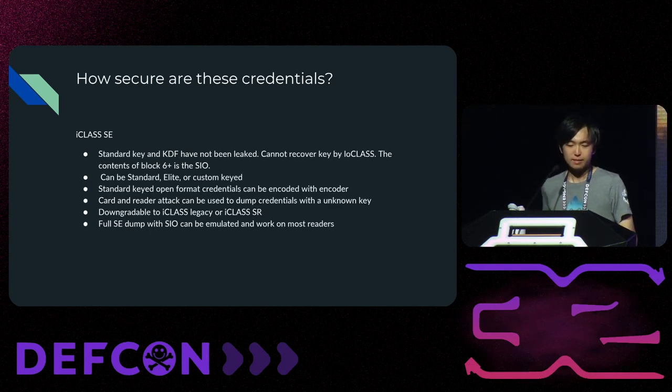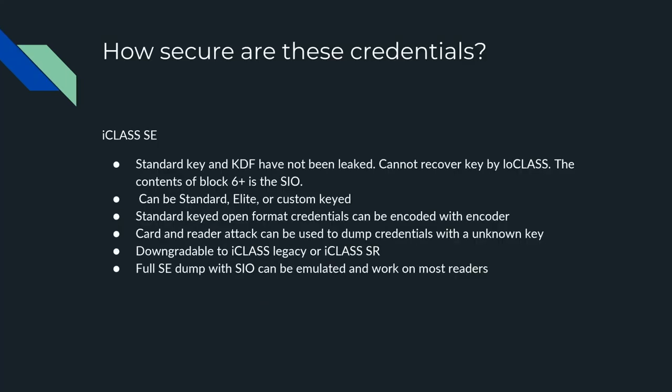Moving to iClass SE — the standard key and the key derivation function are not leaked, and keys are not recoverable by Low Class. We still do not have the master authentication key for SE. These can be standard, elite keyed, or custom keyed. These can also be duplicated if it's an open format like HID 26-bit, where you can use a HID encoder to create another SE card — a legitimate copy, since it's freely encodable as an open format. These are also downgradable to legacy or SR, and can also be emulated, which we'll get into, and it will work on most readers.